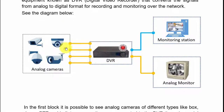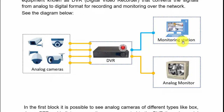Those coaxial cables are similar to the ones you have on your TV, just slightly different. The coaxial cable carries the analog signal to the DVR, which converts it from analog to digital. You can then view everything on a computer by installing a specific software that usually comes with the DVR or can be downloaded from the internet.